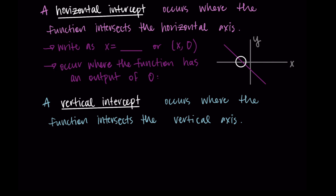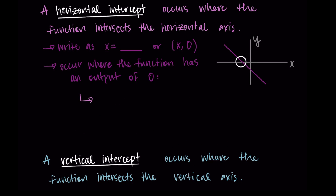You can see that we go over some x amount, but we don't go up or down any value, so our output is just zero. This means in order to identify horizontal intercepts, we set the output of the function equal to zero — so f(x) = 0 — and then solve for the x value that makes that true.